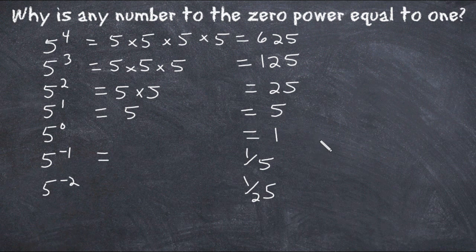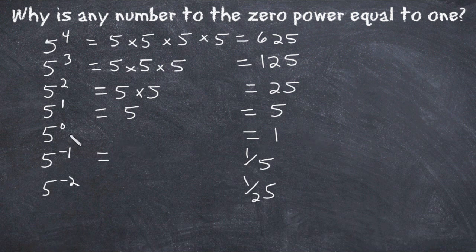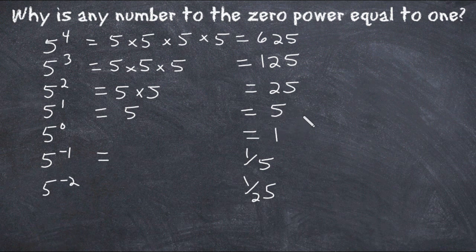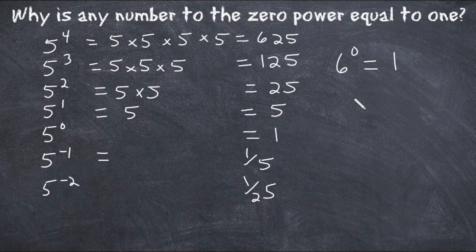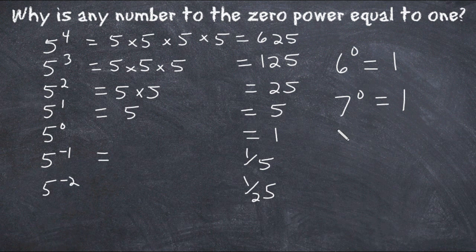And you can try this with any number and you're going to notice that the pattern is going to hold true no matter what you use for the base. So basically, anything to the zero power is really just another way to say that number divided by itself. So if we had, say, six to the zero power, which equals one, it is just another way to say six divided by six, or seven to the zero power is the same thing as saying seven divided by seven, and so on. And that's just a quick explanation as to why any number to the zero power will always be equal to one.